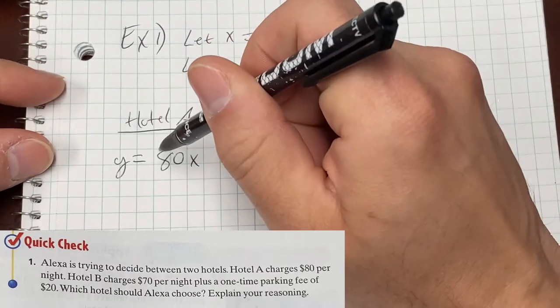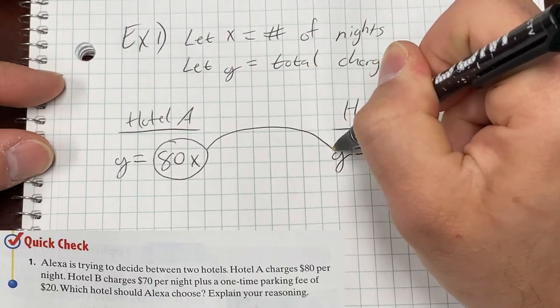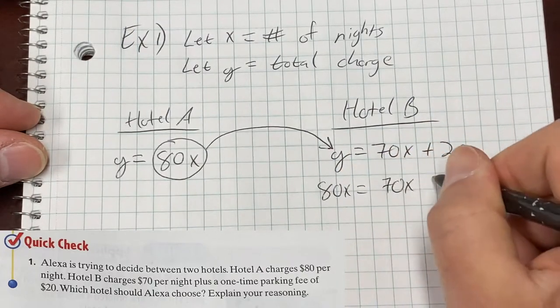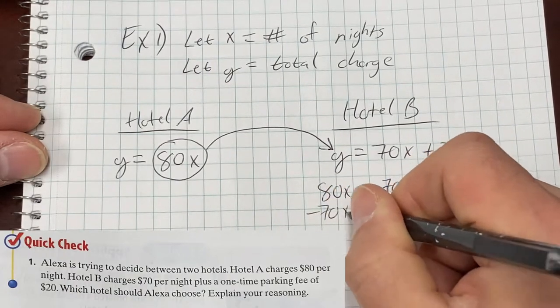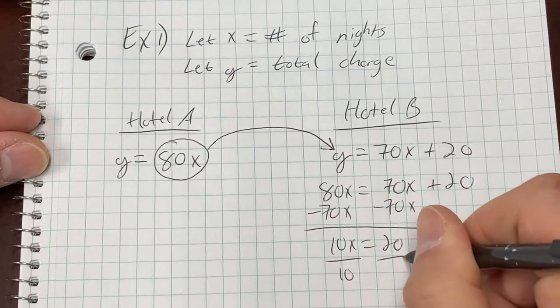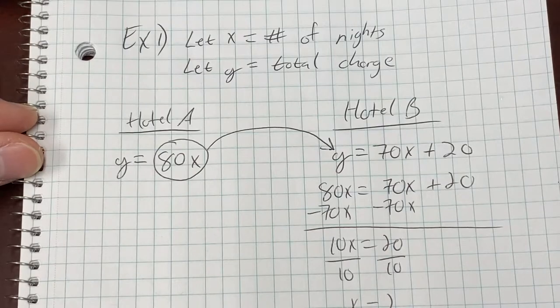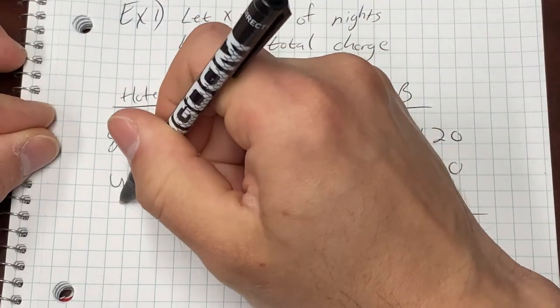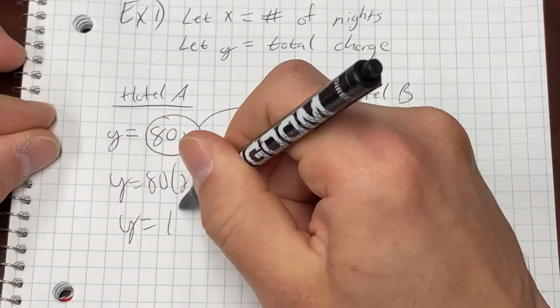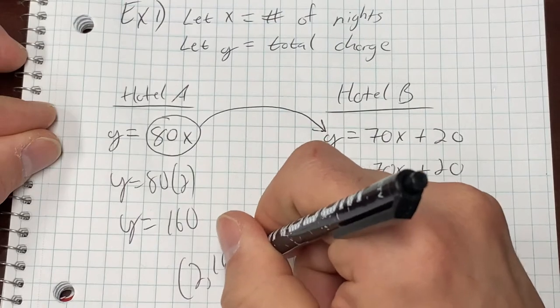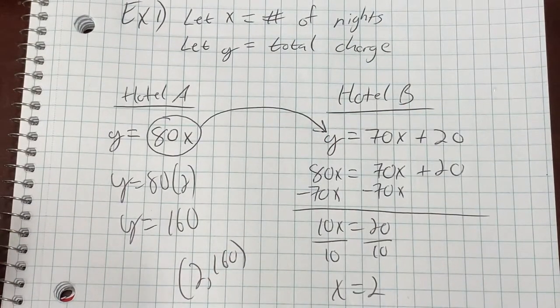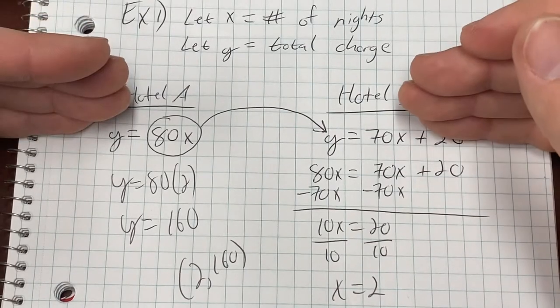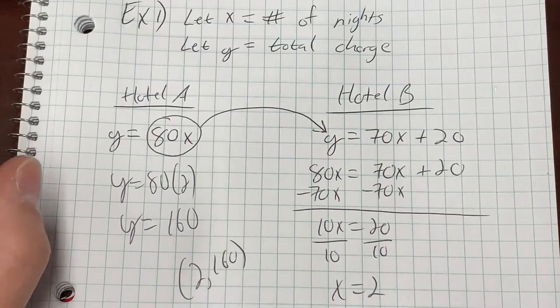Now at hotel B what your total charge is going to be is the $70 per night plus $20 to park your car. You didn't have that at A. A was just $80 a night. B was $70 a night so a little cheaper but $20 to park your car. How will we determine which hotel we would want to stay at? Well we could graph them. I'm not going to do that. I am going to just simply substitute. We are ready to substitute. I'm going to take what y equals and I'm going to substitute it in for y right there. So 80x equals 70x plus 20. Subtract 70x from both sides. 10x equals 20. Divide by the 10 on both sides. Two nights. If you stayed two nights the cost would be the same. Now what would that cost be? Well let's go plug that two over here. What's 80 times two? It would be $160.